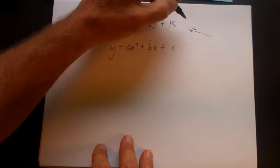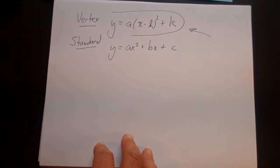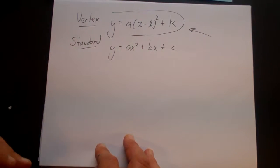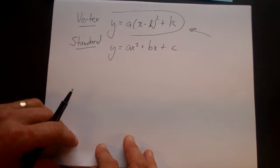And standard form is y equals ax squared plus bx plus c. So, especially with practice, when you look at vertex form, it's very easy to read off what the vertex is and whether it opens up or down, whether it's narrow or wide.